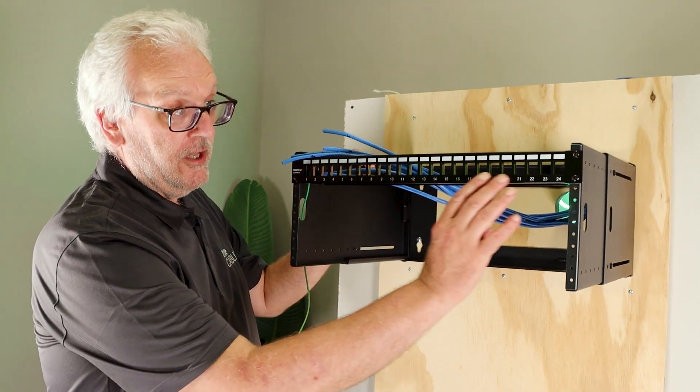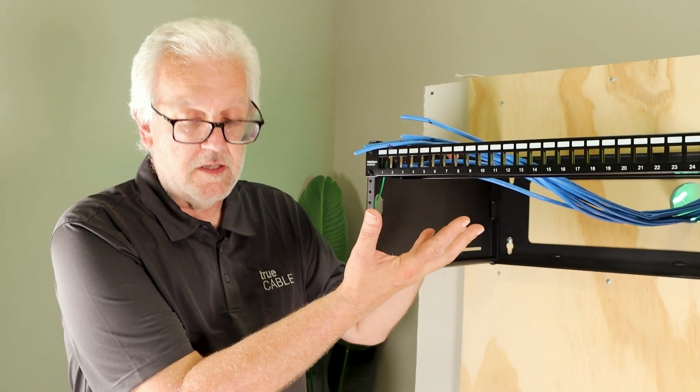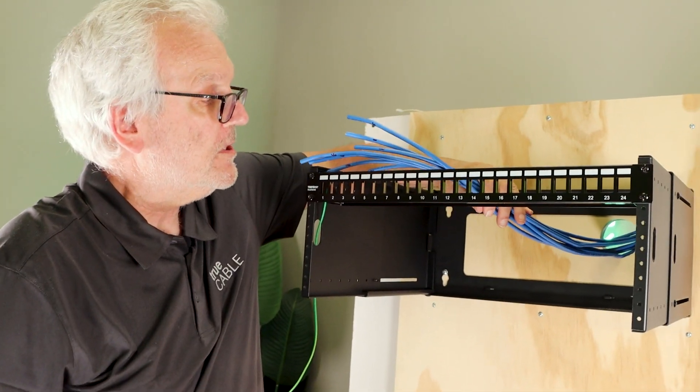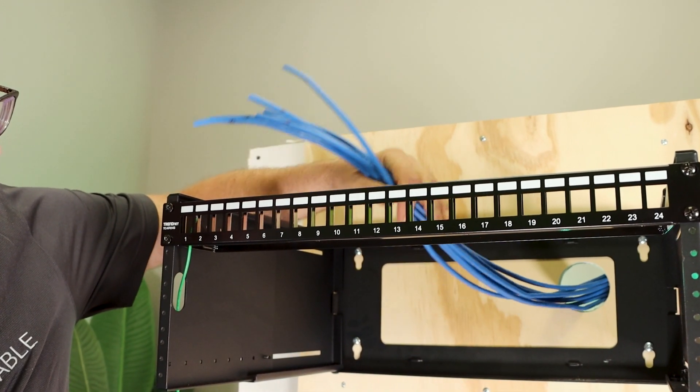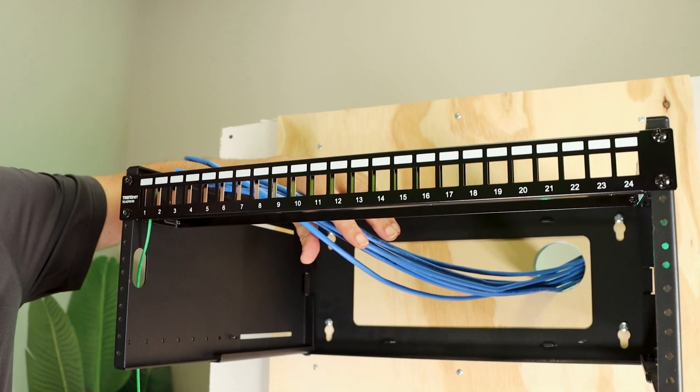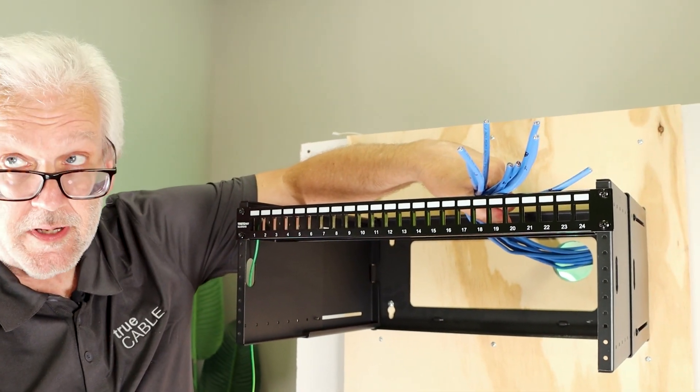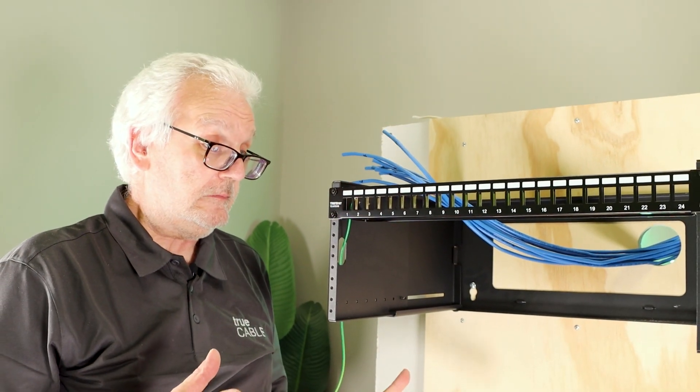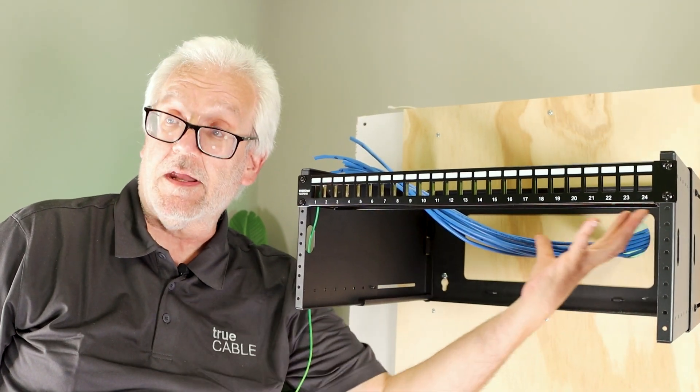So here we have an unloaded patch panel, meaning that it's set up to take keystone jacks for termination. Here we have our runs that we just pulled in behind the patch panel, and now it's our job to get ready to terminate and put them in their proper order. But we also want to make sure that we don't have a big tangled mess back behind here.